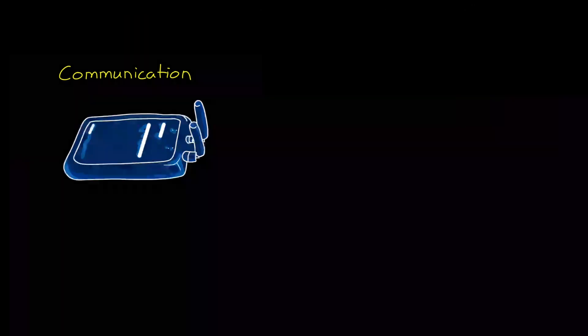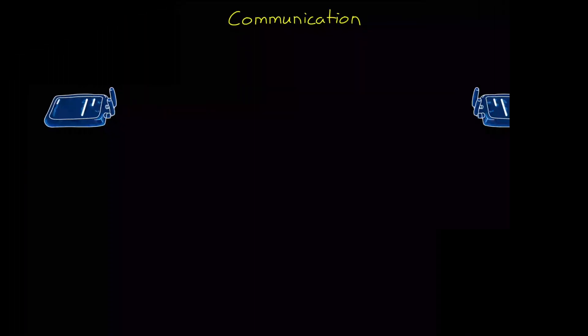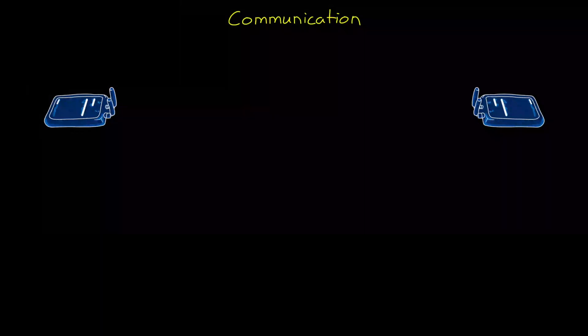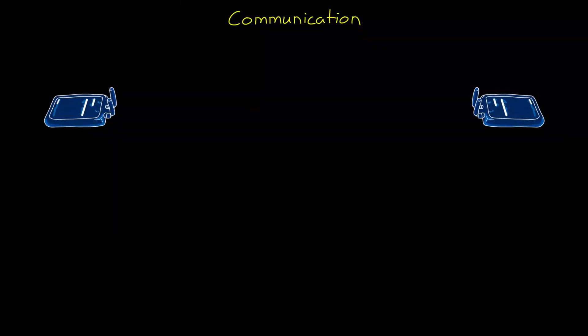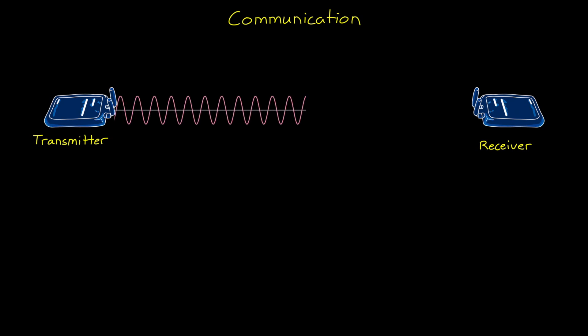Alright, with that out of the way, let's get back to communication. To communicate at a distance, we need to be able to send information from a transmitter to a receiver. And this is done by choosing a carrier frequency that is modulated in some way that encodes the information. For example, we may use a digital modulation process like binary phase shift keying, or BPSK.